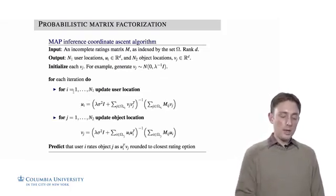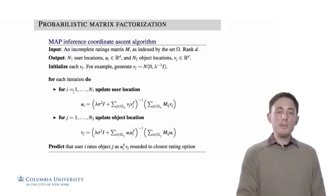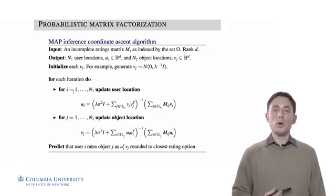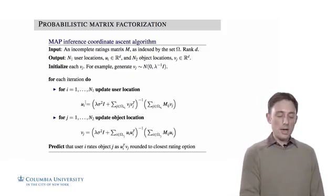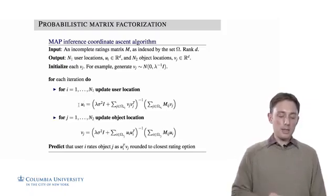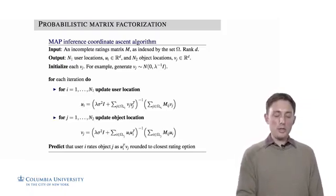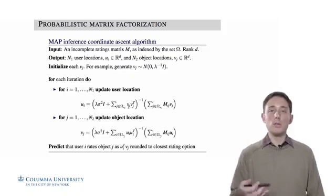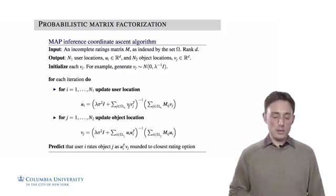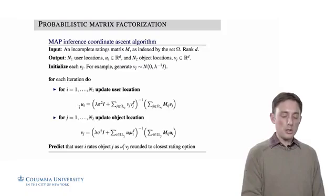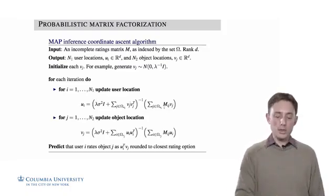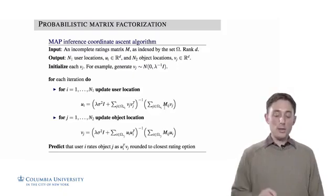First, within a particular iteration, we update each of the N1 user locations by maximizing the objective over each user location, given the current values of all of the locations of all the objects. So we solve this equation, plugging in the current locations of the objects and using the data here.